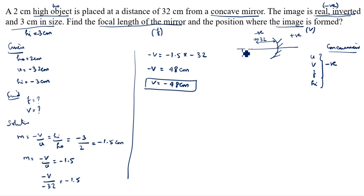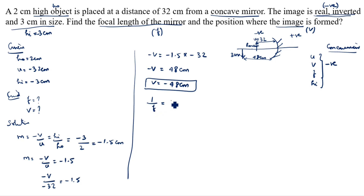Substituting: minus V by minus 32 equals minus 1.5. So minus V equals minus 1.5 into minus 32, which equals 48. Therefore V equals minus 48 centimeter. Now we have V equals minus 48 centimeter and U equals minus 32 centimeter. We will find focal length using: 1 by F equals 1 by V plus 1 by U, that is 1 by minus 48 plus 1 by minus 32.